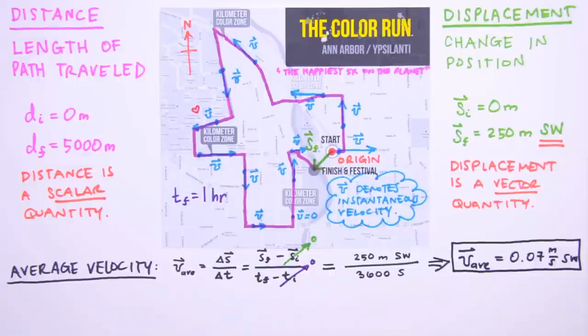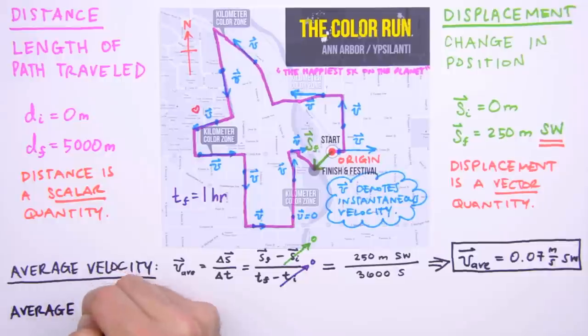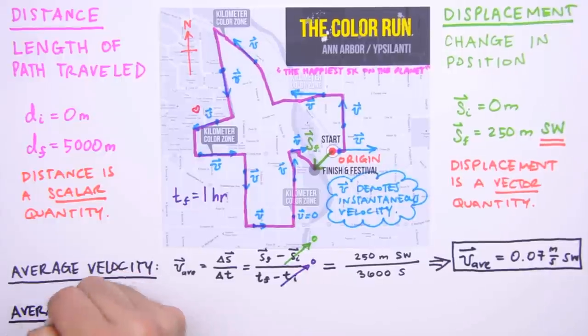That's only 7 centimeters per second — a tortoise is more than twice that fast. Is our runner really that slow? Well, let's take a look at average speed and then come back to this question.